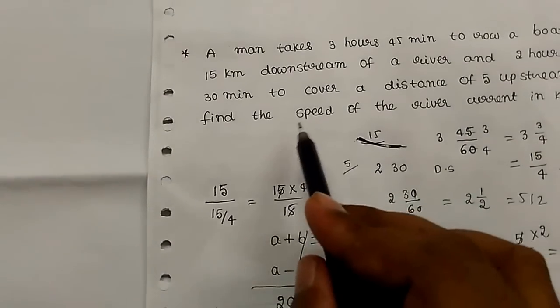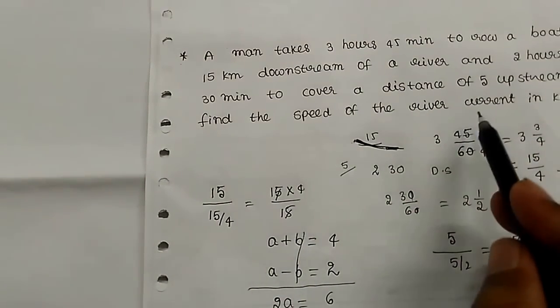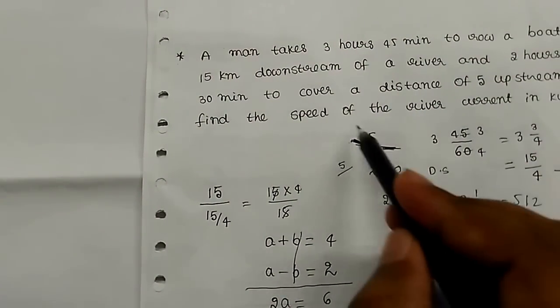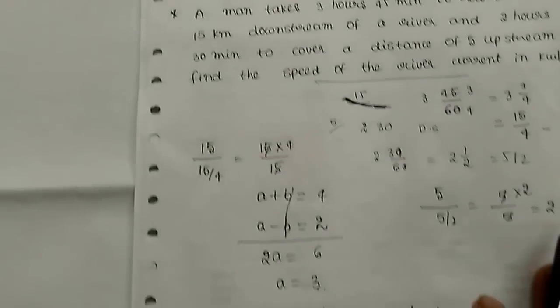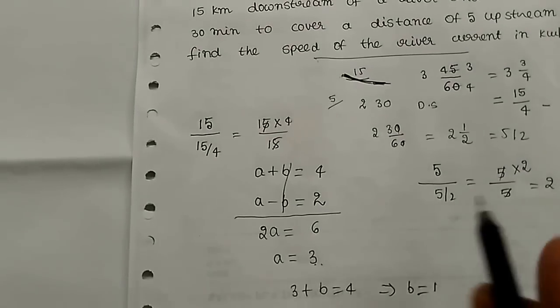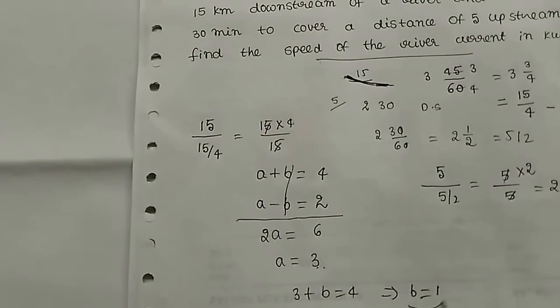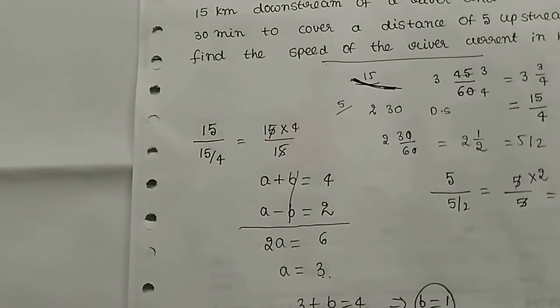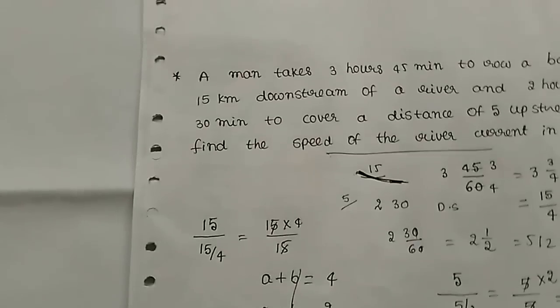Speed of the river current is b, and b is equal to 1 km per hour.